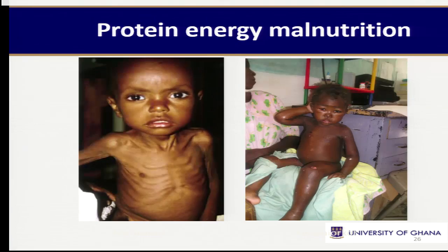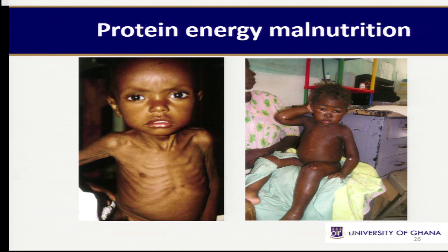On the screen we have examples of children: on my left I have a marasmus child — you can see the ribs — and on my right is a kwashiorkor child.